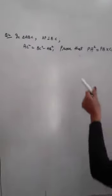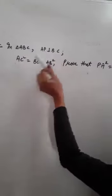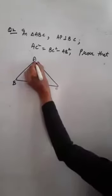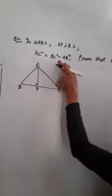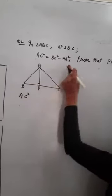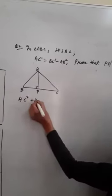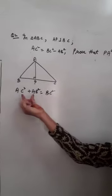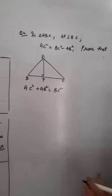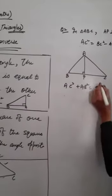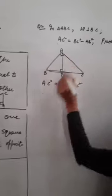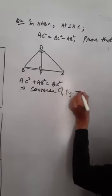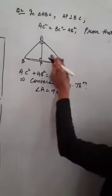Now for the second question. In triangle ABC, AP is perpendicular to BC, and it is given that AC² − AB² = BC². Since one side squared equals the sum of the squares of the other two sides, by the converse of the Pythagoras theorem, angle A = 90 degrees, making it a right angle triangle.